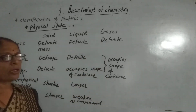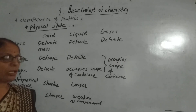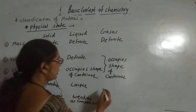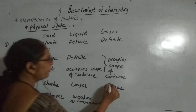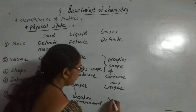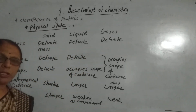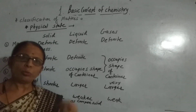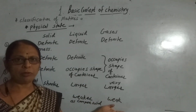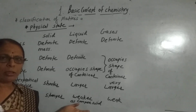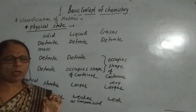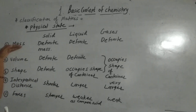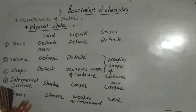Therefore, gases have definite mass, but they occupy whatever volume and shape the container provides. The inter-particle distance is very large, and as this distance is very large, the inter-particular force is very weak. As the inter-particular force is very weak, molecules of gases have the freedom to move anywhere. Liquid particles have limited movement to a certain extent, whereas gas molecules can move freely. So this is the classification of matter based on inter-particular distance and inter-particular forces for solids, liquids, and gases.